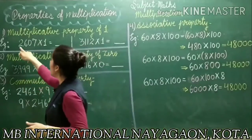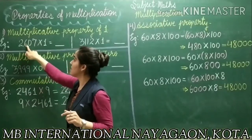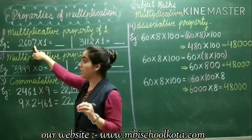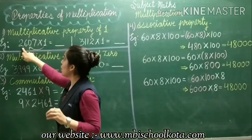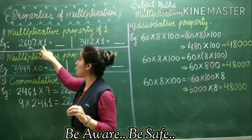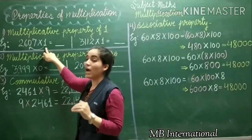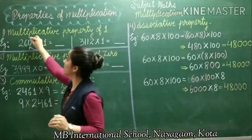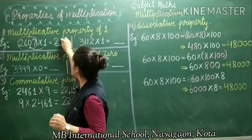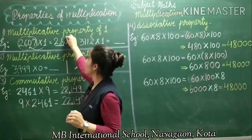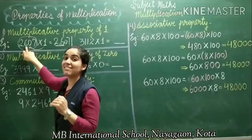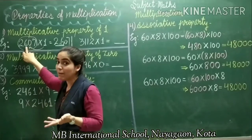Let's take an example. I have taken 2607 and I am going to apply the multiplicative property of 1. I will multiply 2607 by 1. After multiplying by 1, according to the property, I will get the same number — the number itself. So the product will be 2607. Whenever we multiply any number by 1, we get the number itself as the product.